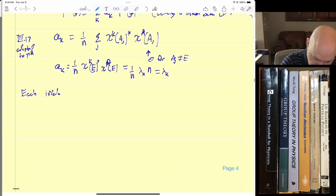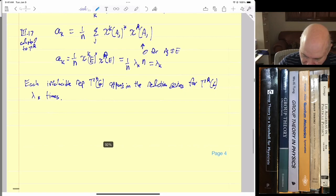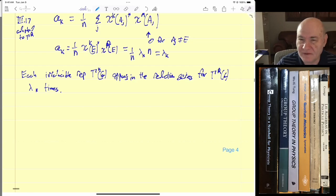So this is a very interesting result. Each irreducible rep gamma K appears in the reduction series for gamma R lambda K times. So think about that. We've established two things. We've established that every irreducible representation appears in the regular representation. So if we want to get all the irreducible representations of a group, we can just get the regular representation, which is easy. Reduce it. That's hard, but theoretically possible. Reduce it. And we will get each irreducible representation a number of times Lambda K equal to its dimension.